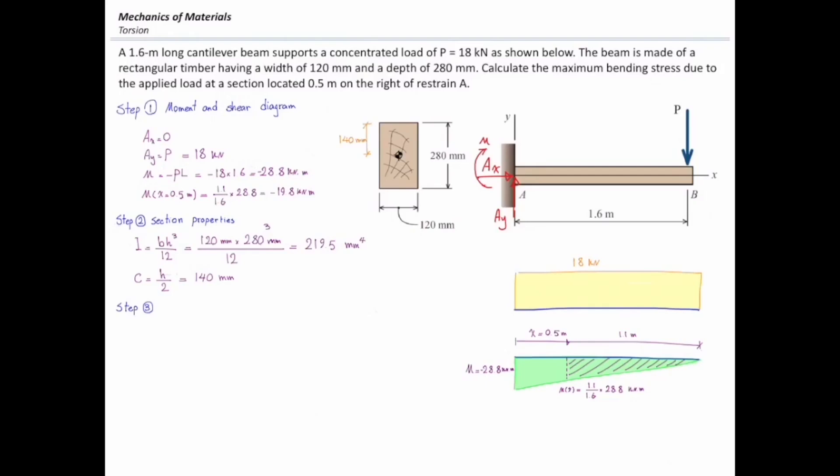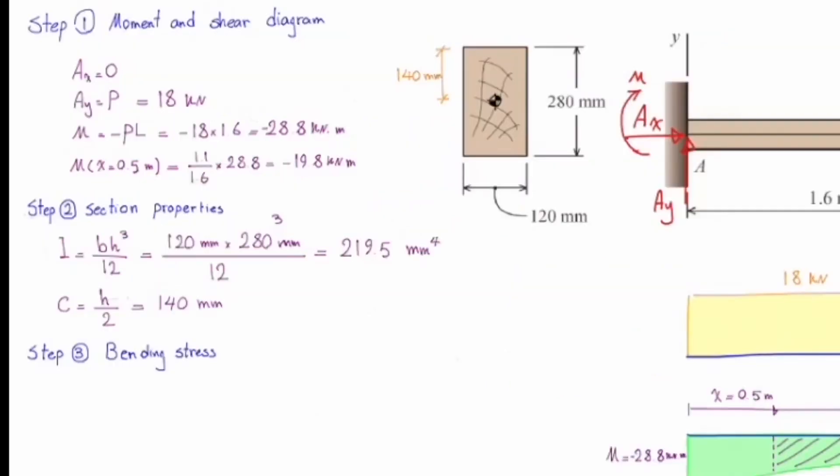Now we can calculate the bending stress. Sigma is MC over I. Moment is 19.8 kN, which is equal to 19.8 times 10 to the sixth Newton millimeters. C is 140 millimeters.